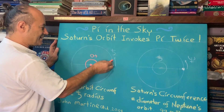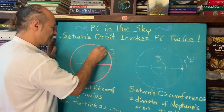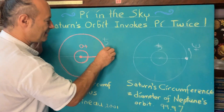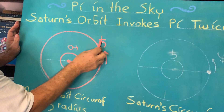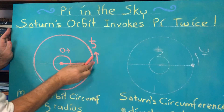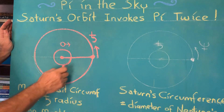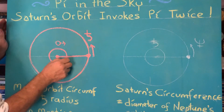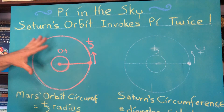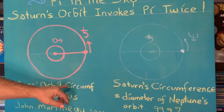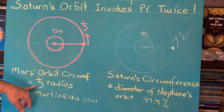So let's draw the orbit of Saturn going around the Sun. Saturn takes about 30 years to complete its orbit, and it has a certain length. What's interesting is that the circumference of Mars unraveled becomes the radius of Saturn. That's a Pi relationship — P-I. So Mars' orbit circumference is equal to the radius of Saturn. That's one example.